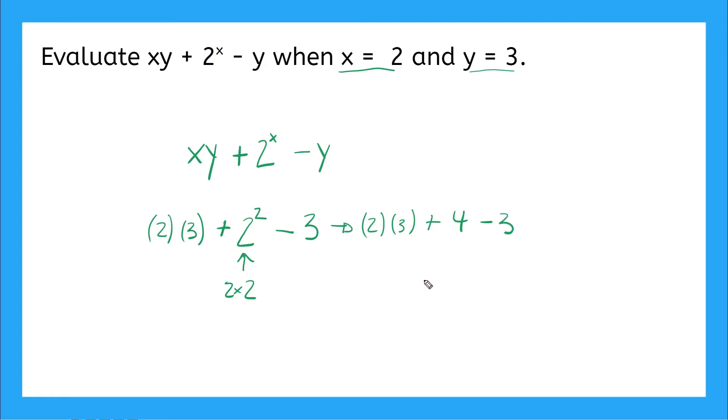Now my next order of operations, I can do this multiplication. So 2 times 3, that'll give me 6 plus 4 minus 3. And now when I'm doing arithmetic, I just go from left to right. So I can say 6 plus 4, that's going to be 10 minus 3. And that will give me 7. So our answer here is 7.